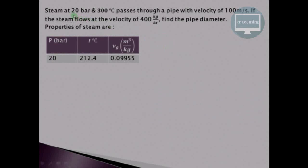In this next example, steam at 20 bar pressure and 300°C passes through a pipe with a velocity of 100 m/s. The steam flow rate is 400 kg/hour and we have to find the pipe diameter. The saturation temperature at 20 bar is 212.4°C, but the steam temperature is 300°C, which is greater than the saturation temperature, so the steam flowing through the pipe is superheated.